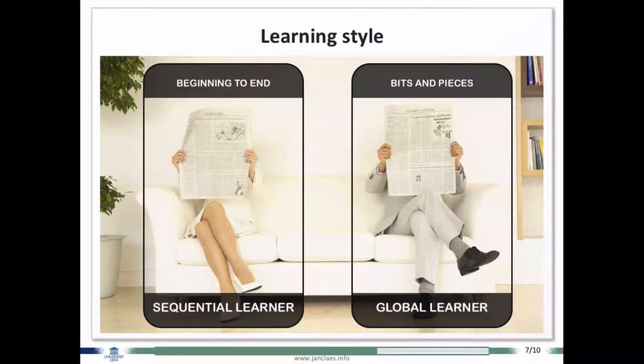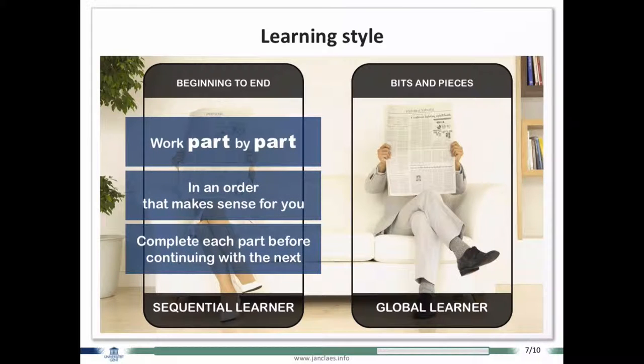And for the sequential learners I have some advice. If you write a text, for example you will write a book, then work part by part, chapter by chapter. And each chapter you finish everything. So when you write this chapter, you work on content of the chapter, you work on formatting, you include pictures, tables, whatever. When the chapter is finished, only then you proceed to the next chapter. Work part by part, one at a time, and complete each part before continuing.